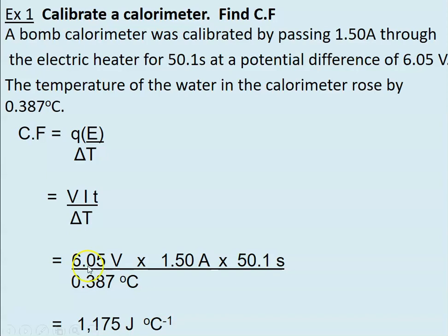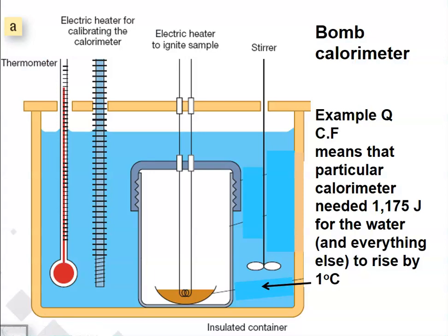So be very careful—is your calibration factor in joules or kilojoules? The calibration factor means that we just worked out that it would take 1,175 joules to heat this entire thing—the water and all of the instruments in it—by one degree. So once you know that, we can use that to work out if we did a combustion reaction of food in here. We can use our calibration factor—if it went up by ten degrees, it would go up by ten times.